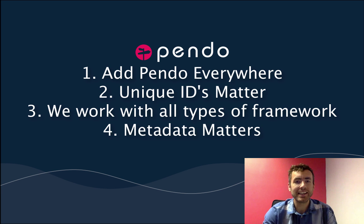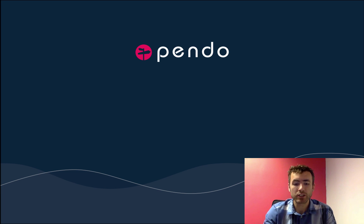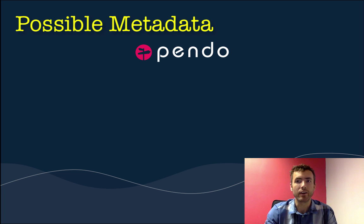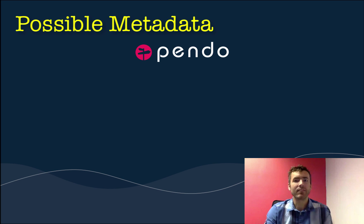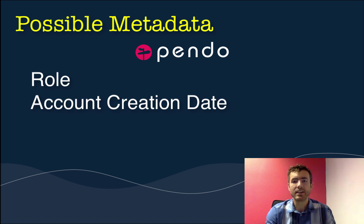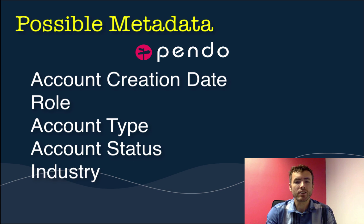Number four: metadata matters. You want to include as much information as possible regarding your accounts and visitors and how you want to pass that to Pendo. If you're not installing the snippet yourself, work closely with the installer to make sure as much information as you want about your users is passed along to Pendo. Down the road you can target guides off of this, create segments, and analyze feature usage based on the type of users. Things like roles, account creation dates, trial account status — anything you'd like to know about your visitors or accounts — look at ways to include that in the snippet and pass it over to Pendo for future usage.